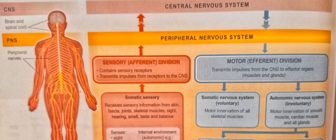For example, respiration — we cannot control our lungs consciously all the time. And heartbeat: the heart beats automatically. These are involuntary actions, and they are controlled by the Autonomic Nervous System.